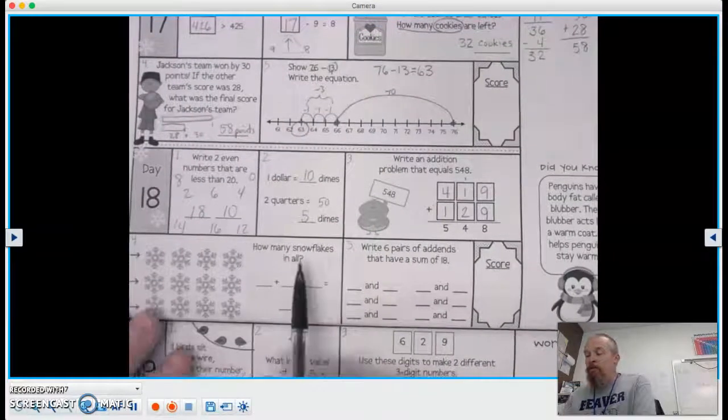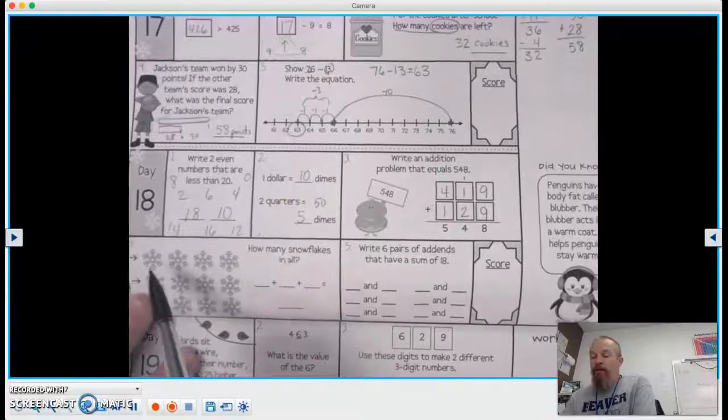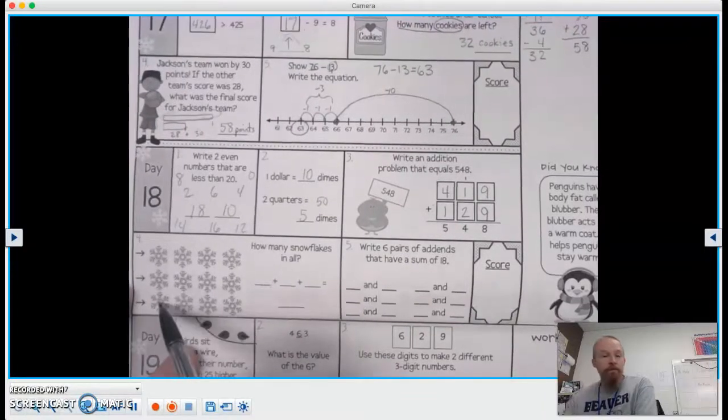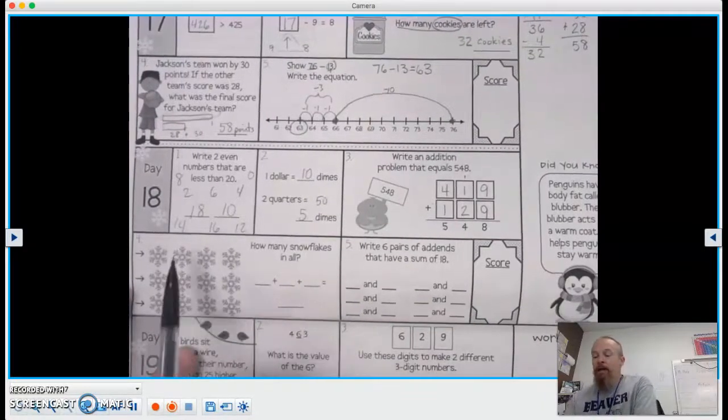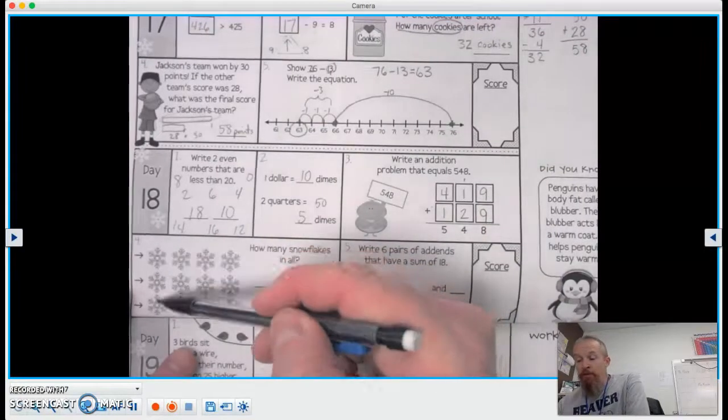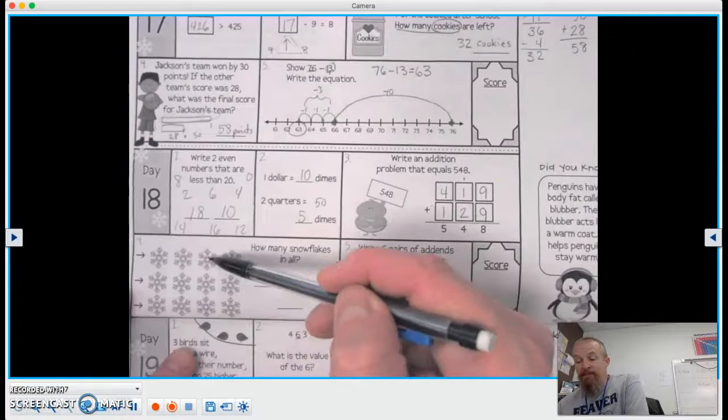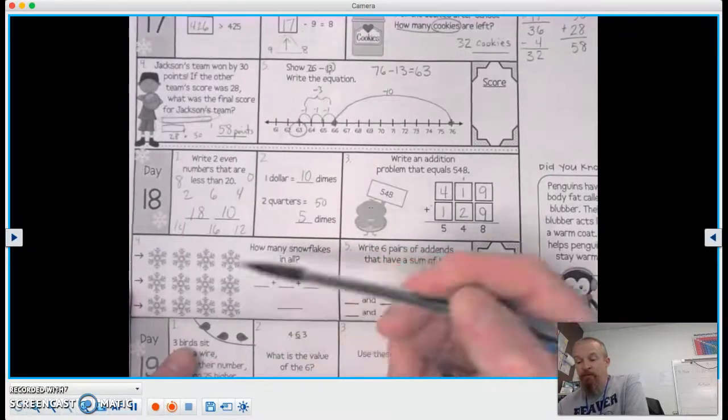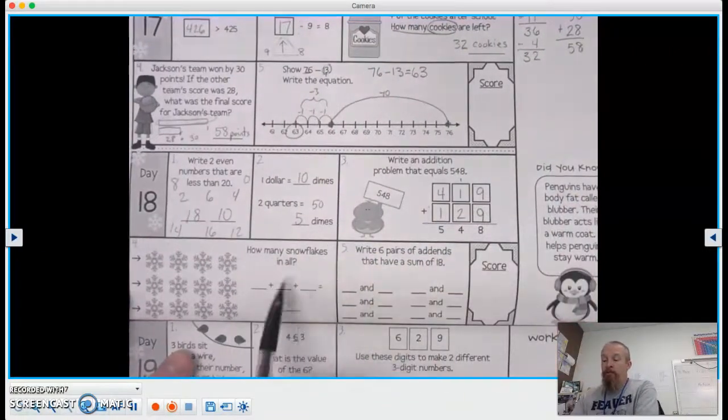Number four, how many snowflakes in all? So here we have 1, 2, 3 snowflakes going down. And I have 1, 2, 3, 4 snowflakes across. So we can go 3, 6, 9, 12.